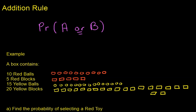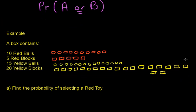We'll build up to what the definition is. So we have a box that contains 10 red balls, 5 red blocks, 15 yellow balls, and 20 yellow blocks. The first thing we're going to figure out is the probability of selecting a red toy. So the event is getting a red toy.